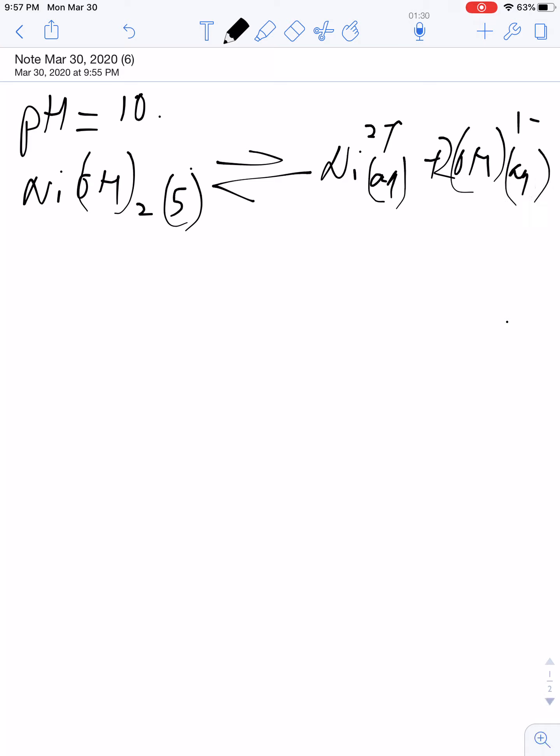You work through your ICE table. However, they are basically telling us the equilibrium concentration by telling us the pH. If my pH is 10, it means my pOH is 4.